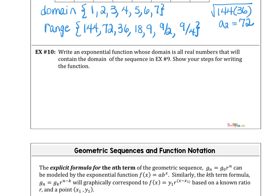Write an exponential function whose domain is all real numbers that will contain the domain of the sequence from example 9. So f of n is the a sub 1 term, which is 144. Our rate was 1 half to the n minus 1. And again, I can keep the 1 half to the n.